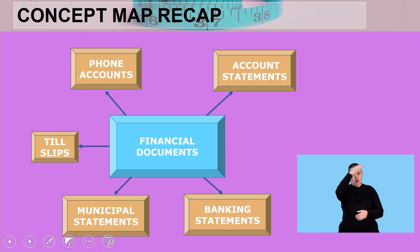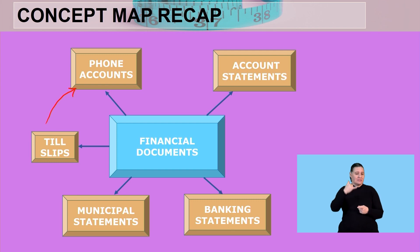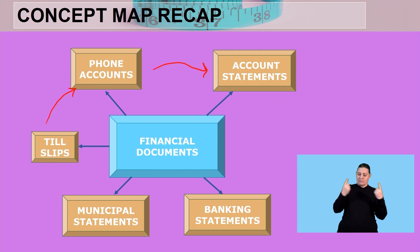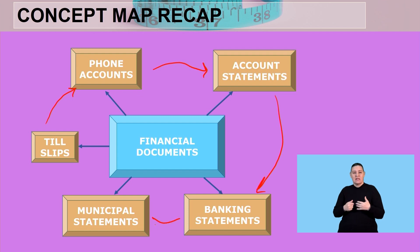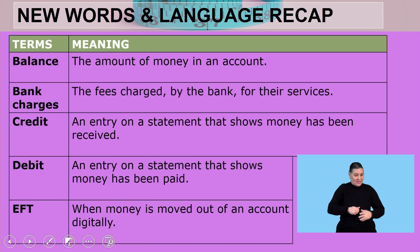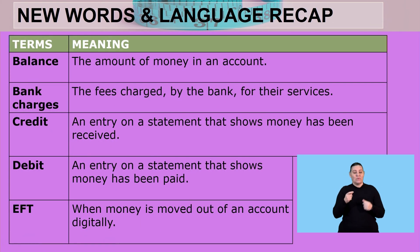Welcome back everyone, let's wrap this up. If you look at the concept map, we started on till slips, we spoke about phone accounts, account statements, we went on to banking statements, then the challenging municipal statements — and it came out okay. The words we spoke about: balance, the amount of money in an account.